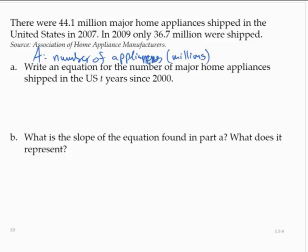All right. So then our two ordered pairs, since T is the number of years since 2000, our ordered pairs would be (7, 44.1) and (9, 36.7).